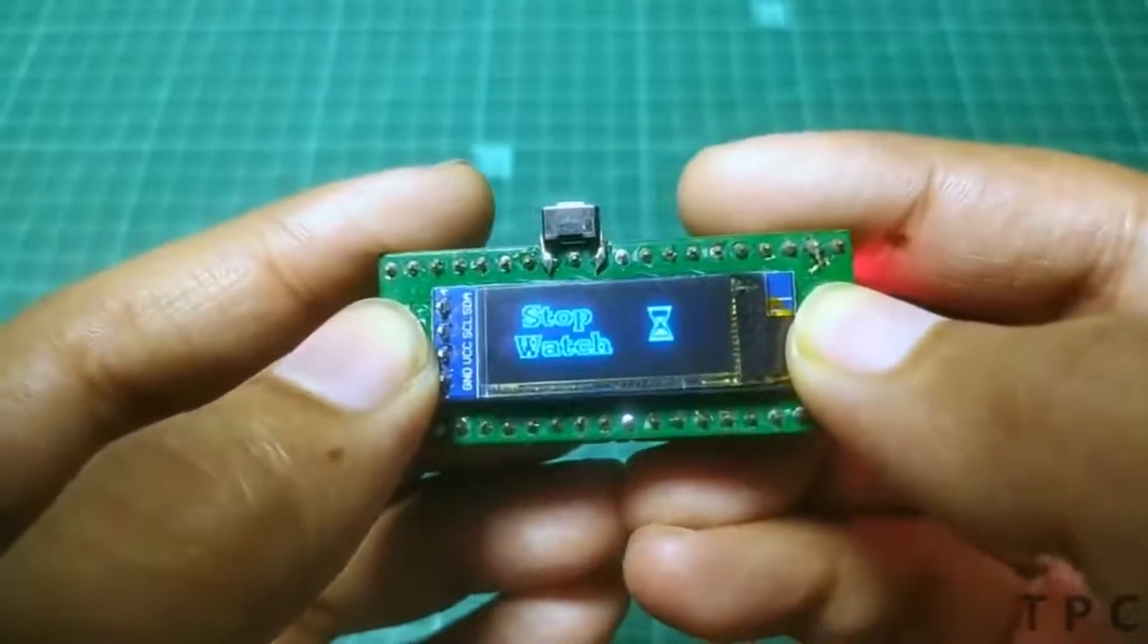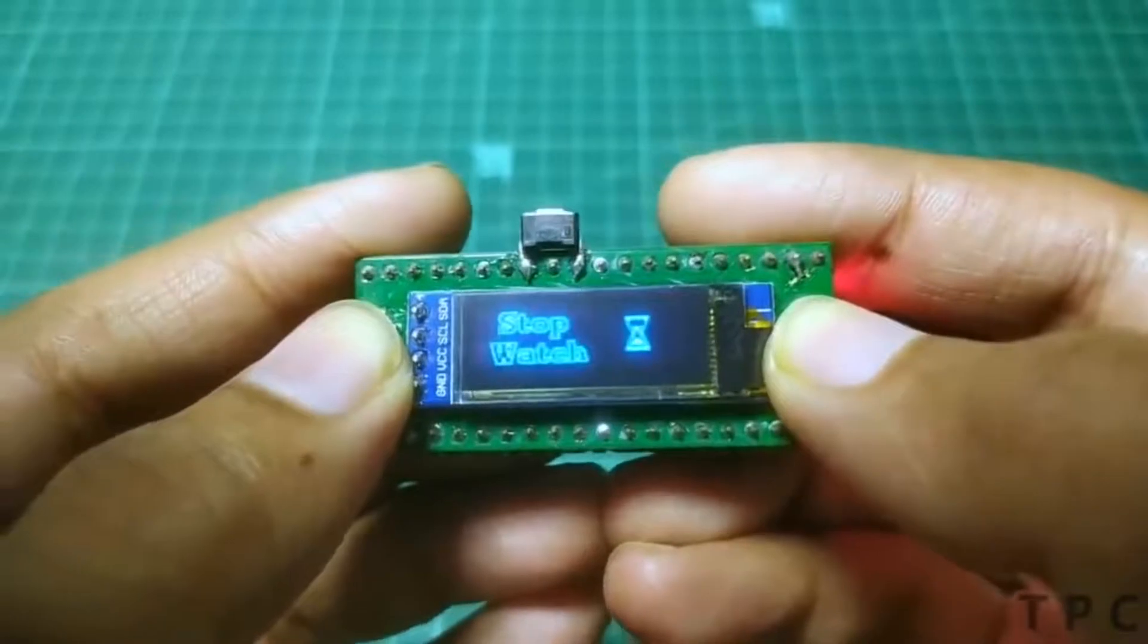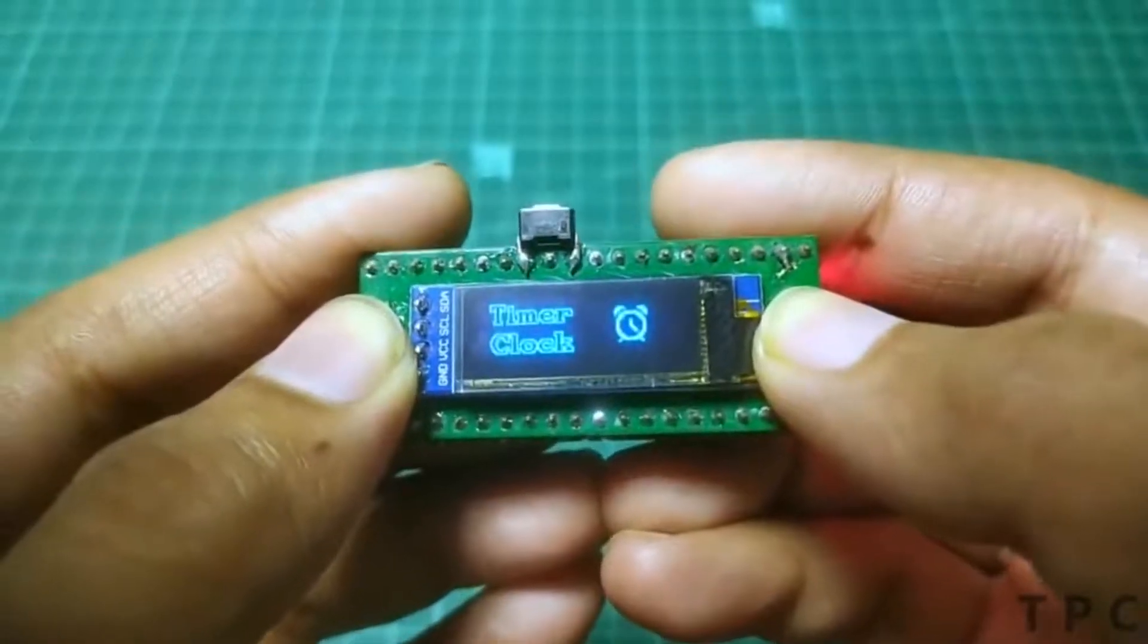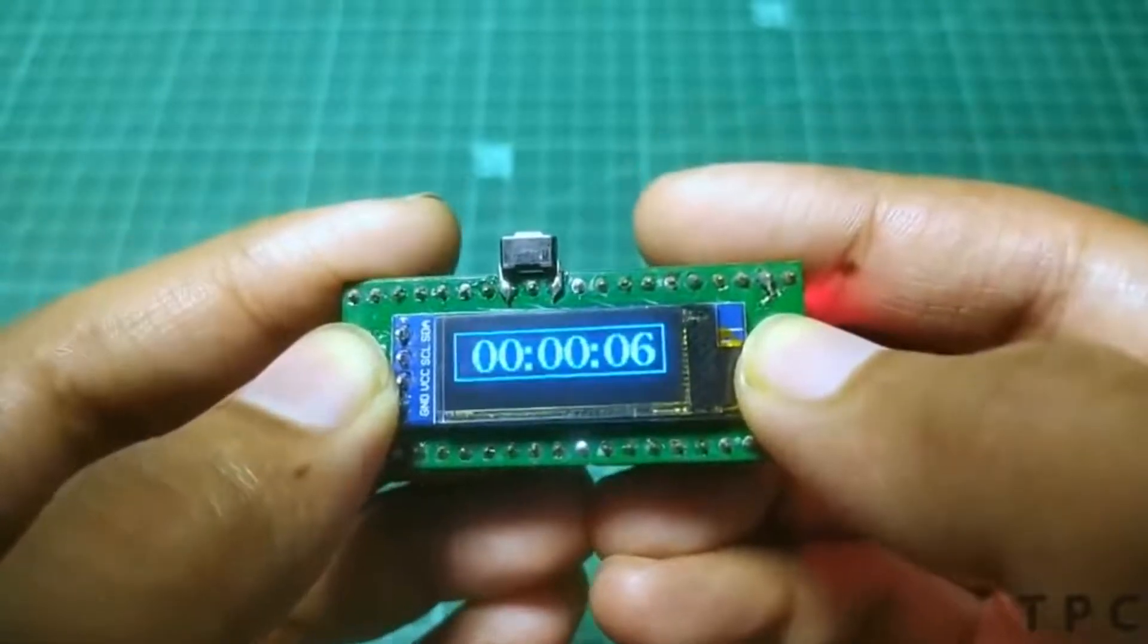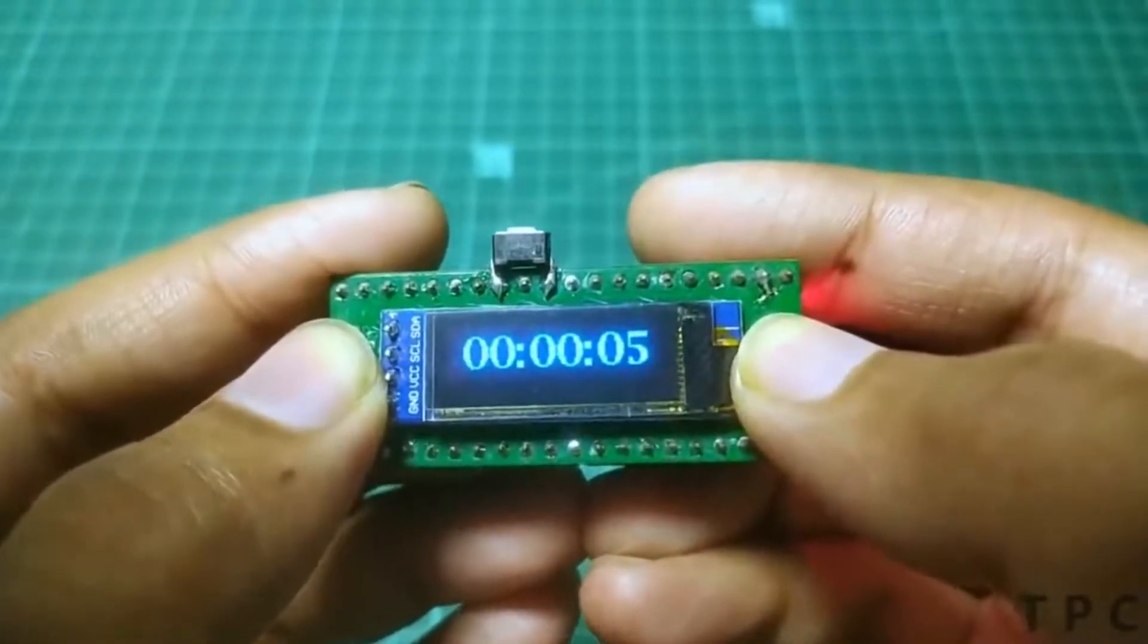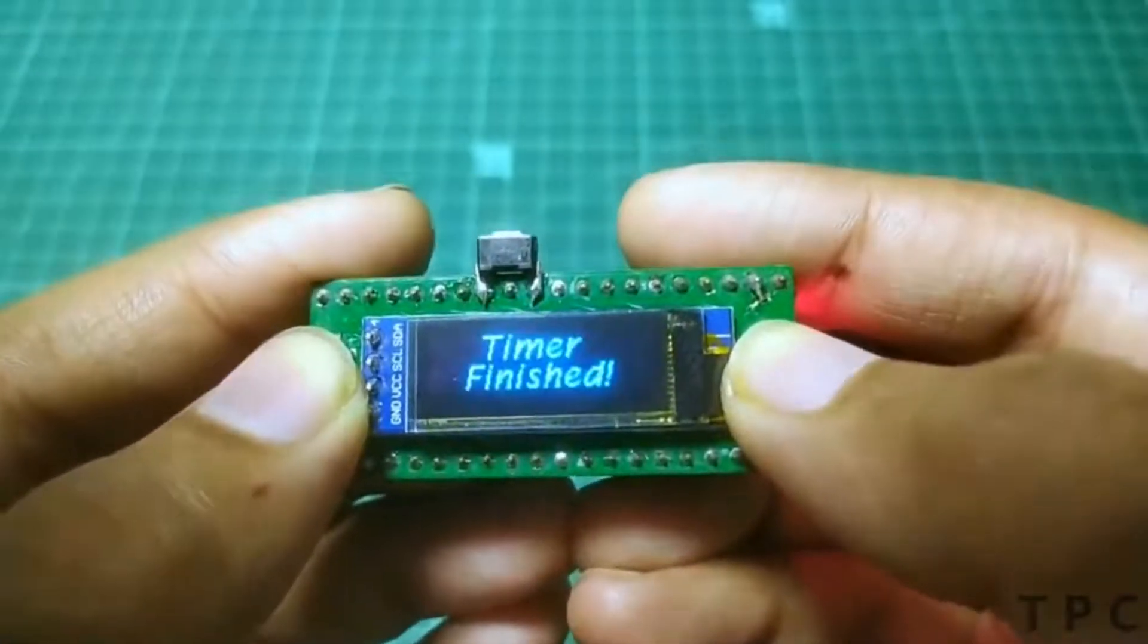Moreover, the module also features a stopwatch which can be selected using the left button. The other feature of this clock is a timer. When the timer is over, a message gets displayed on the screen.